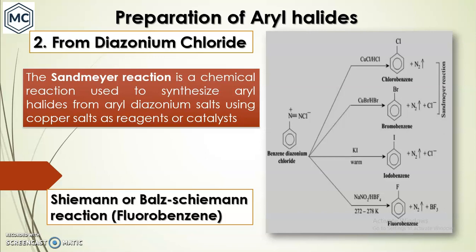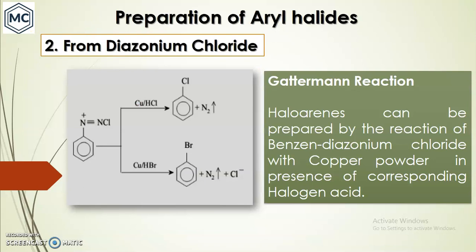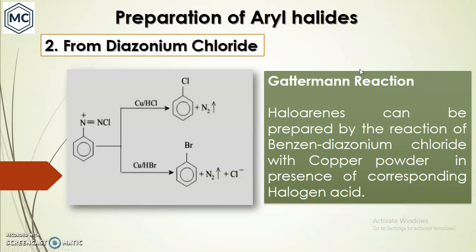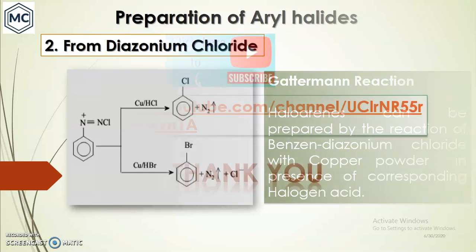The second reaction for preparation of aryl halide is the Gattermann reaction. The only difference between the Sandmeyer and Gattermann reactions is the choice of catalyst: in Gattermann you use copper powder, whereas in the Sandmeyer reaction you use copper salt. In the Gattermann reaction, halo arenes can be prepared by the reaction of benzene diazonium chloride with copper powder in the presence of the corresponding hydrohalic acid. That is all about preparation of aryl halide. Next, we will move to SN1 and SN2 reactions. Thank you for watching.